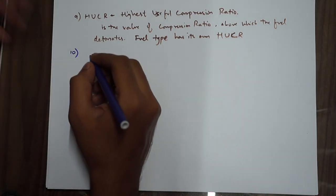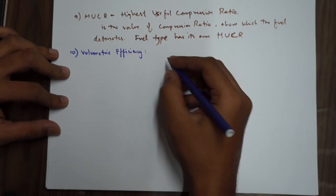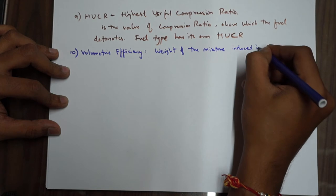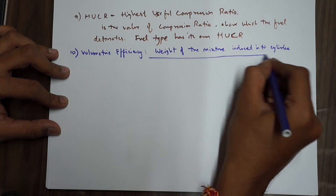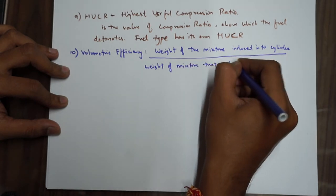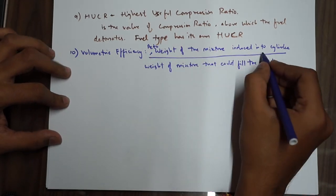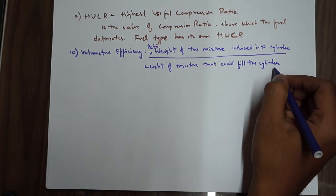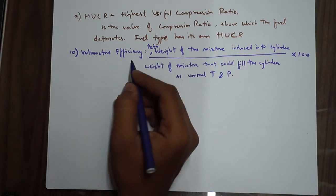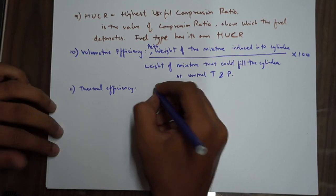Now we're going to discuss some efficiency points - these are very important. Volumetric efficiency is the actual weight of the mixture induced into the cylinder divided by the theoretical weight of the mixture that could fill the cylinder at normal temperature and pressure, multiplied by 100. That gives you the volumetric efficiency of the engine.